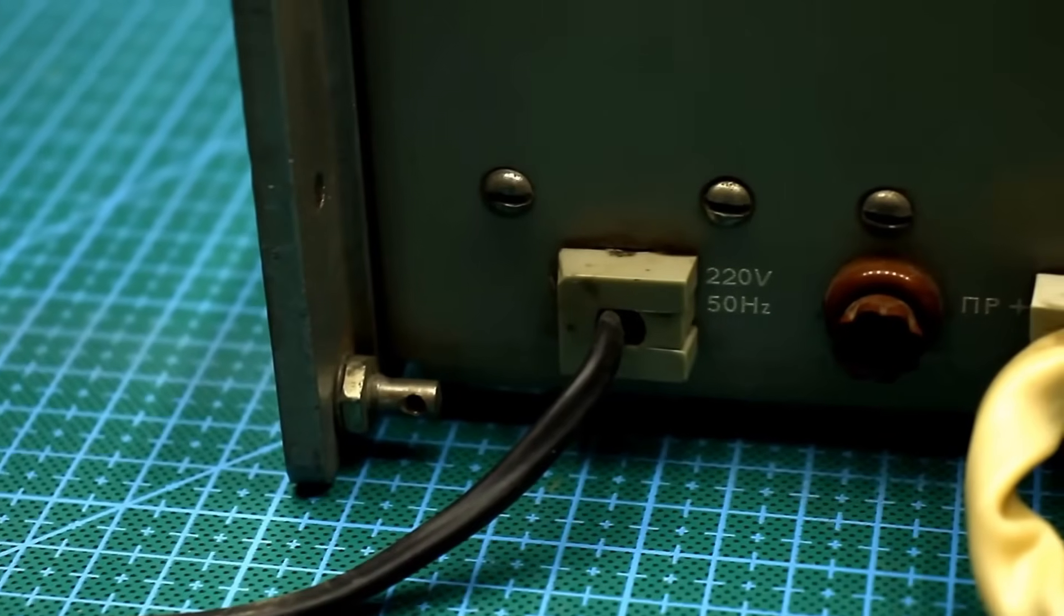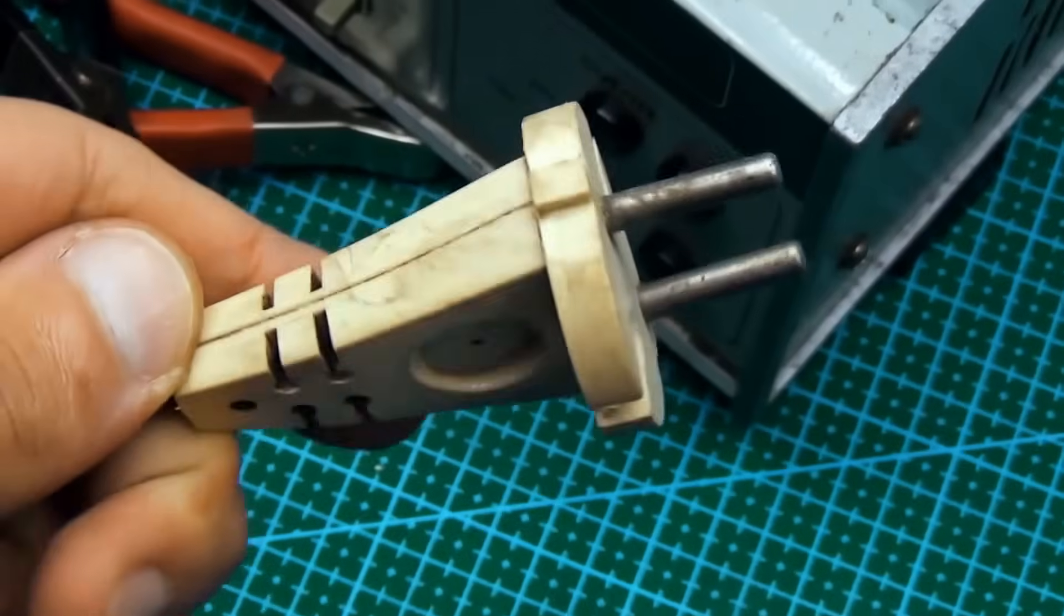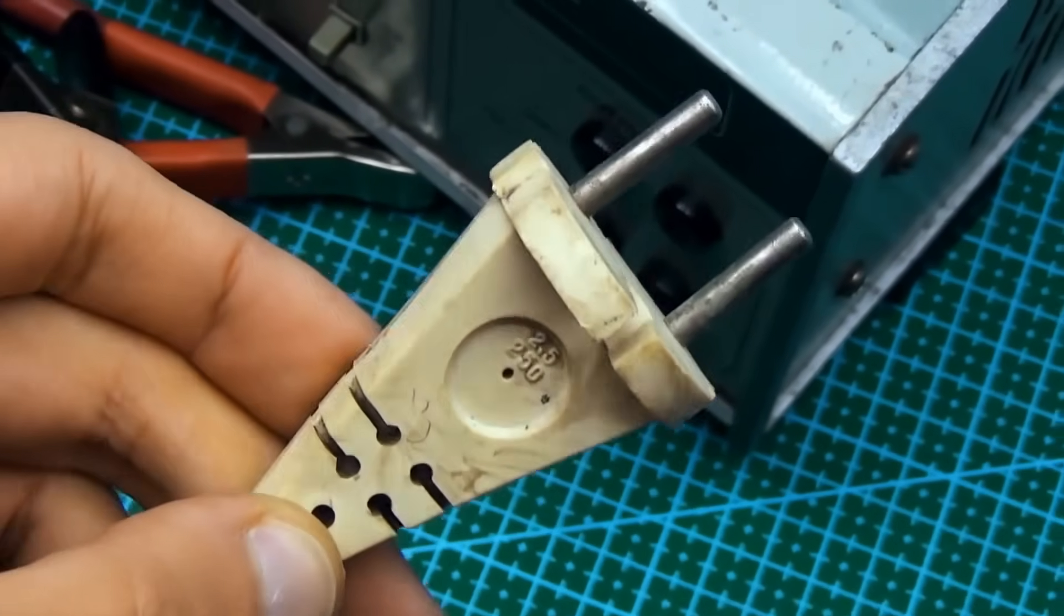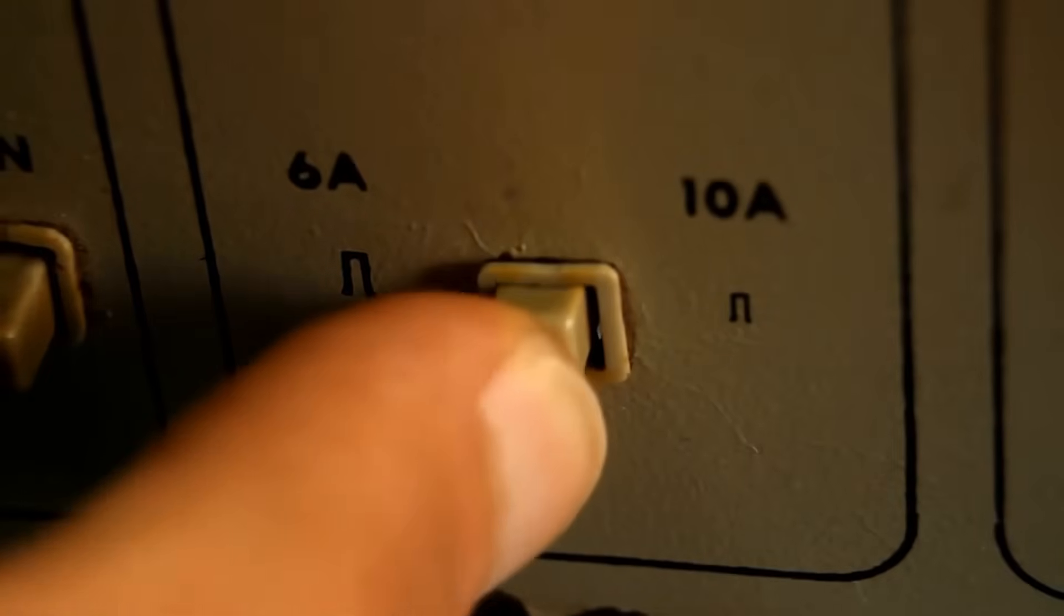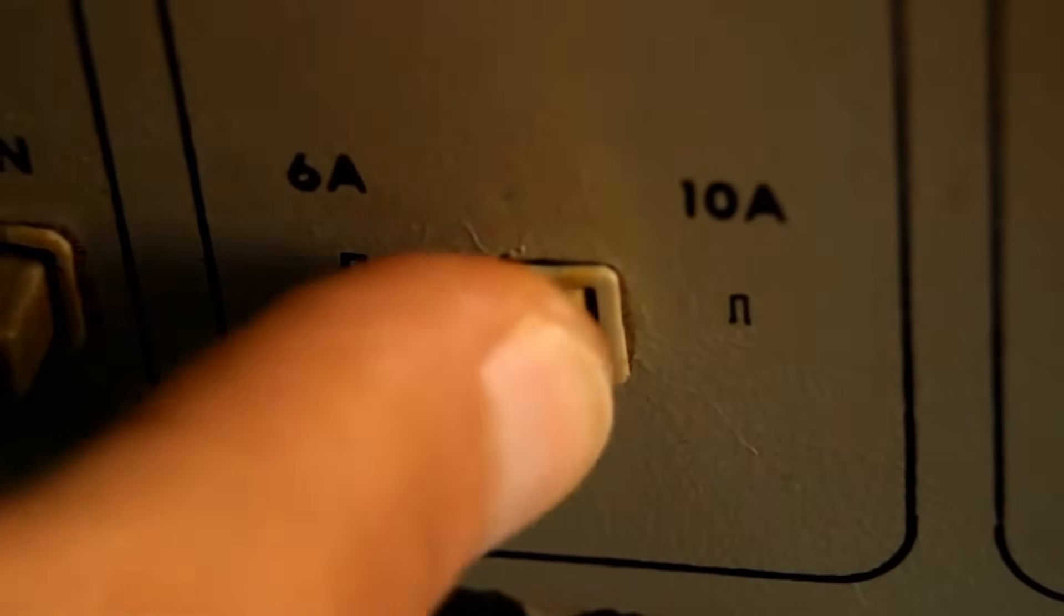Let's start with the main characteristics. It is powered by a 220 volt network when functioning as a charger. There is a charge current switch on the front panel. You can choose either 10 or 6 amps.